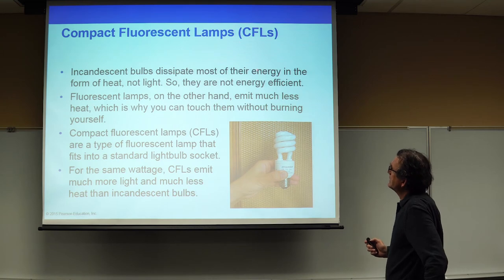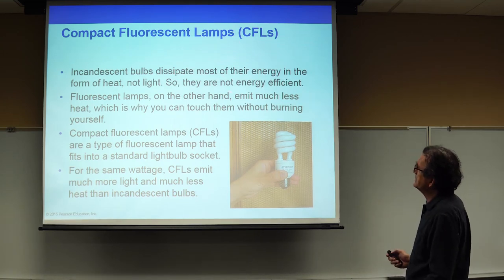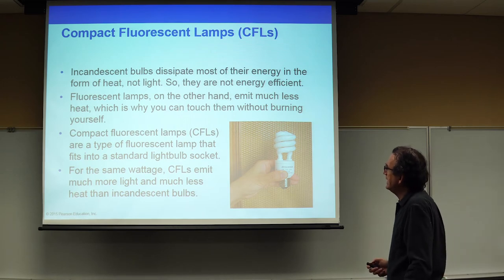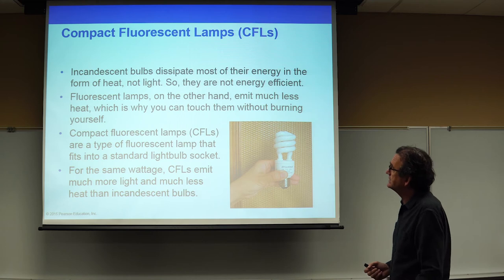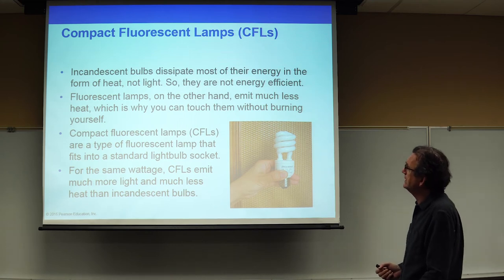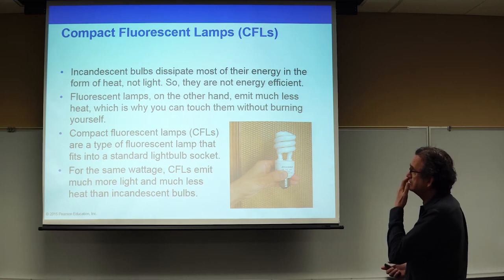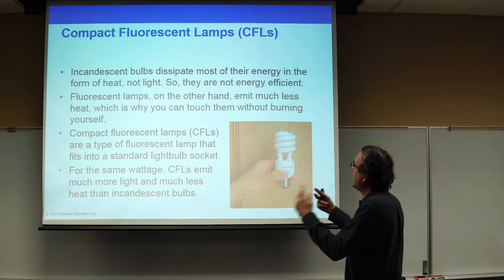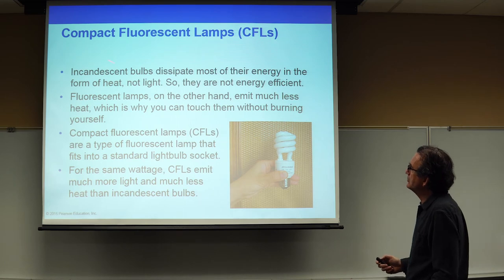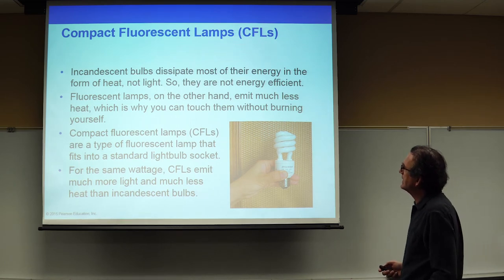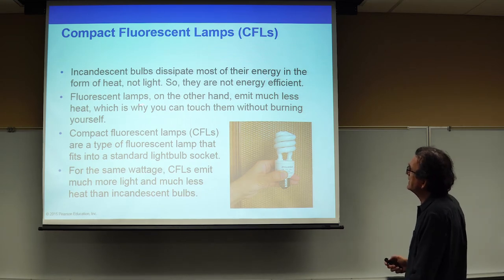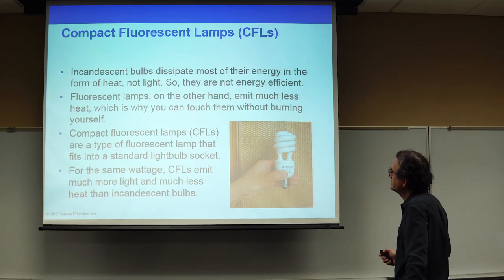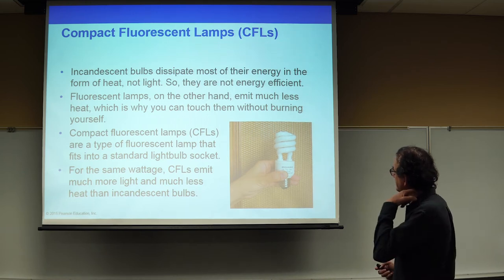Compact fluorescent lamps, called CFLs, are incandescent lamps that dissipate most of the energy in the form of heat, and they have since been replaced by LED lights. The problem with using all this electricity to make the bulb hot enough to generate light is that most of that energy goes into heat, which does not help you see in the dark. Fluorescent lamps emit much less heat, which is why you can touch them without burning yourself, and they brought the cost down tremendously in terms of energy use.